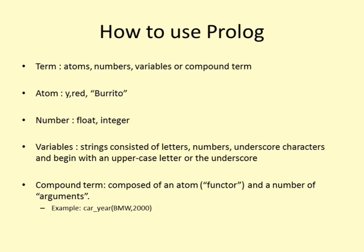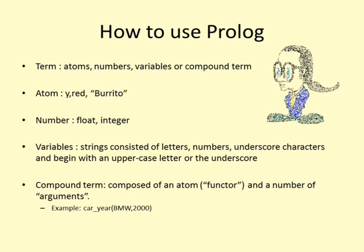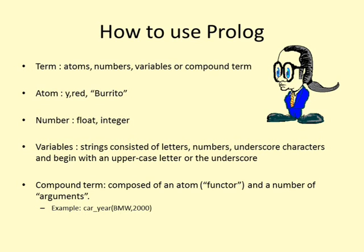A number can be a float or an integer. Variables are strings consisting of letters, numbers, and underscore characters. They begin with an uppercase letter or an underscore. A compound term is composed of an atom, which is called a functor, and a number of arguments which are terms. Compound terms are ordinarily written as a functor followed by a comma-separated list of argument terms in parentheses.